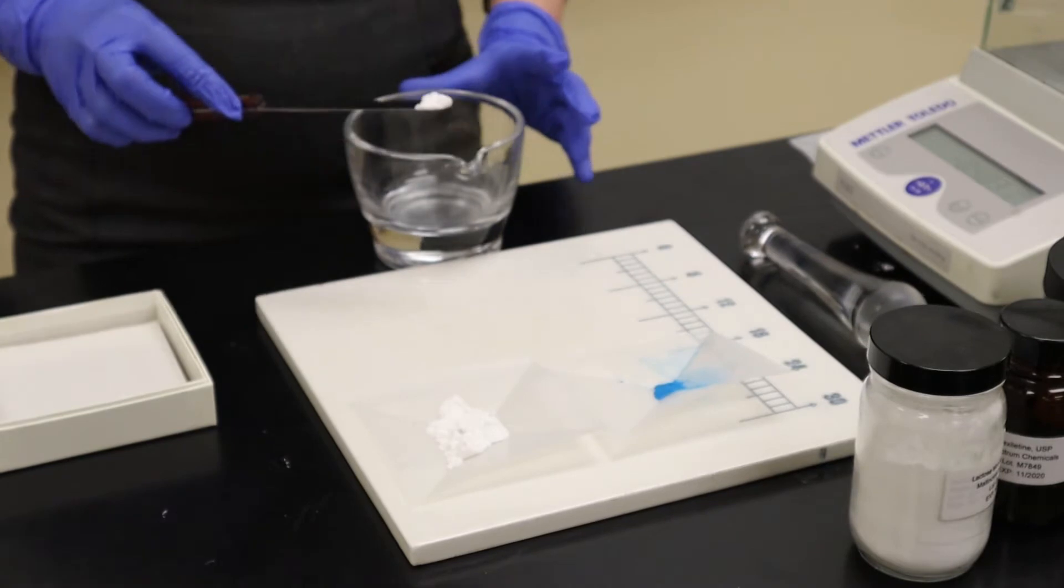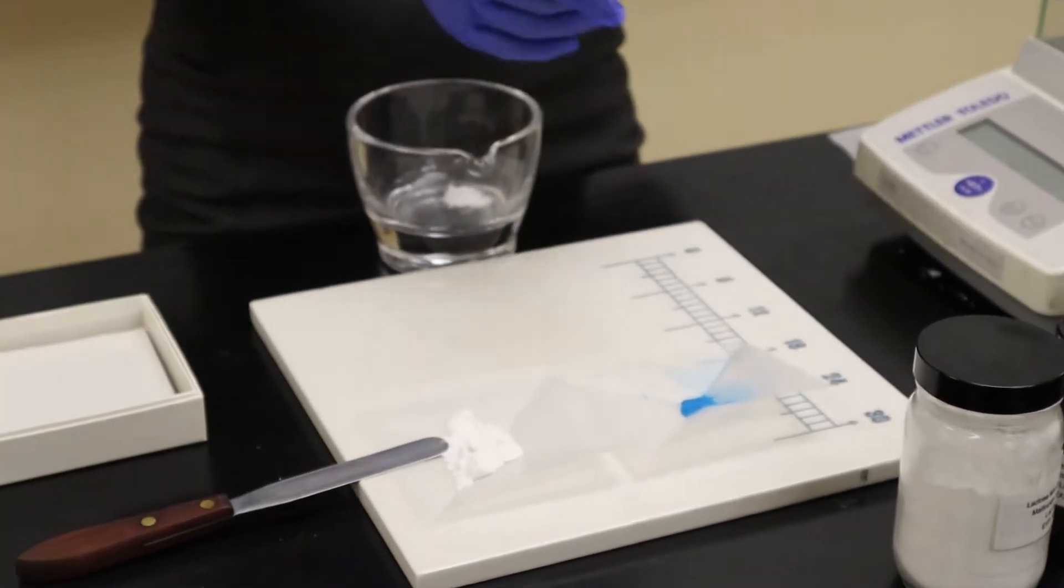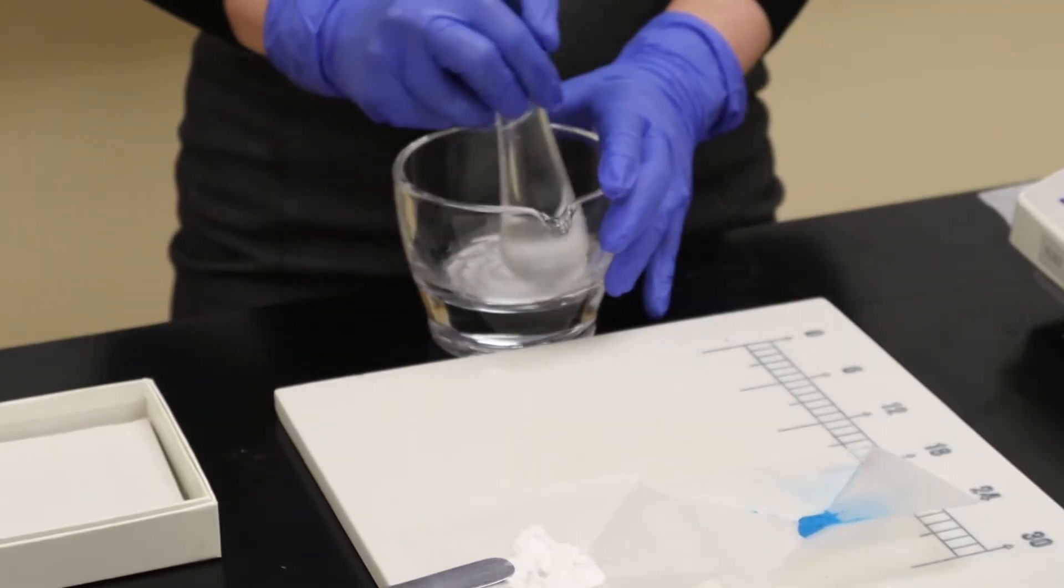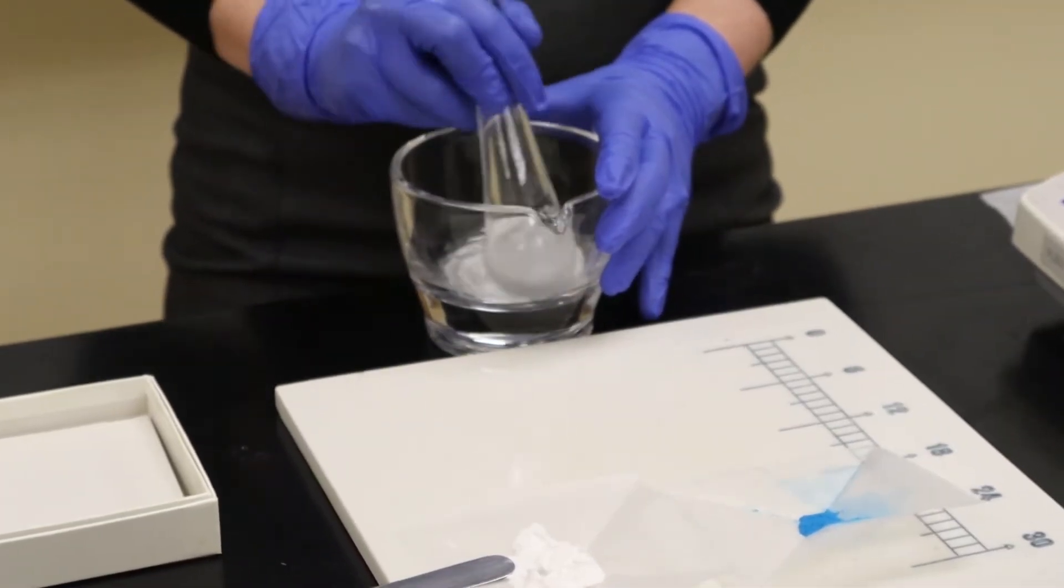The first thing I'm going to do is I'm going to put a little bit of my lactose into my glass mortar and I'm going to triturate it around in order to fill in any cracks or crevices that may be present in my glass mortar.